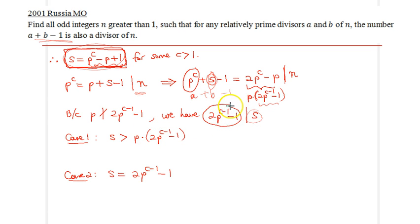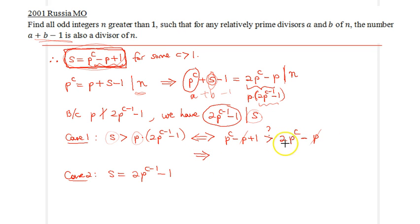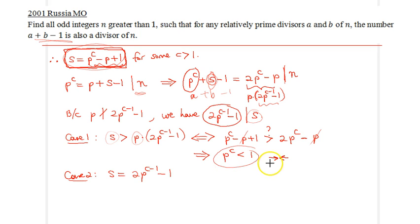In Case 1, if s has other factors, those factors will be larger than p, so s must exceed that expression. After rearranging: replacing s with p^c minus p plus 1, we get p^c minus p plus 1 greater than p times (2p^(c-1) minus 1), which gives p^c minus p plus 1 greater than 2p^c minus p. After cancellation we get that p^c is strictly less than 1, which is obviously a contradiction since p is a prime greater than 1.